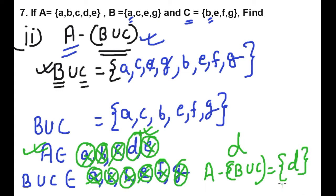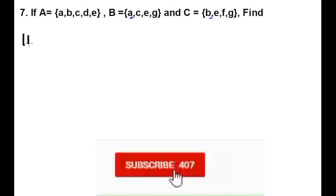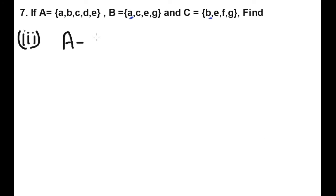So our answer is: A minus (B union C) equals {D}. This is our answer. Next question — question number 3 is A minus (B intersection C).